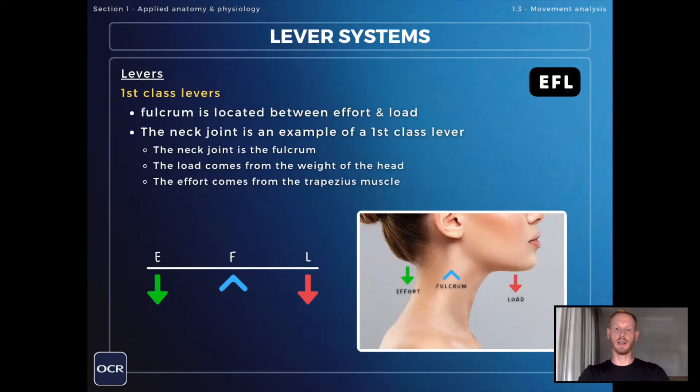Now you need to know about the three classes of lever. With first-class levers the fulcrum is located between the effort and load forces on the lever arm. In other words the fulcrum is always in the middle of a first-class lever. The example that you need to know about in the human body is the neck joint. The joint itself is the fulcrum, the load comes from the weight of the head and is directed downwards and the effort comes from the trapezius muscle which pulls on the cranium as it contracts.